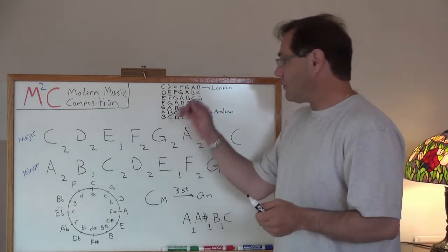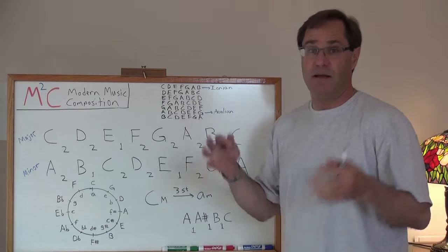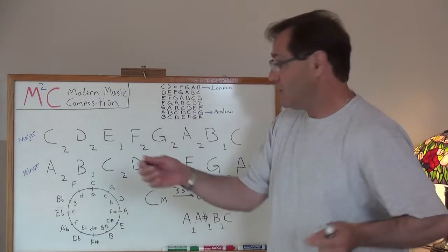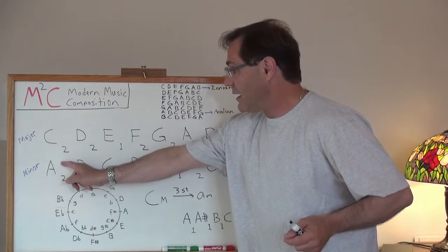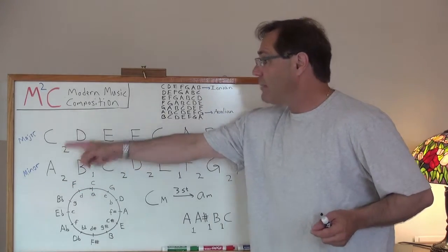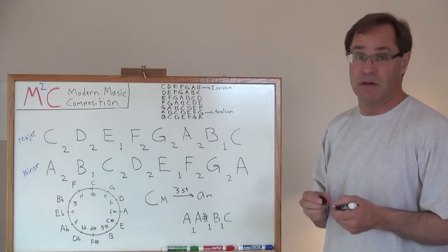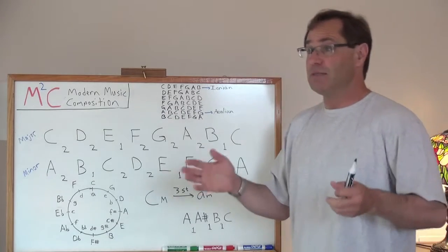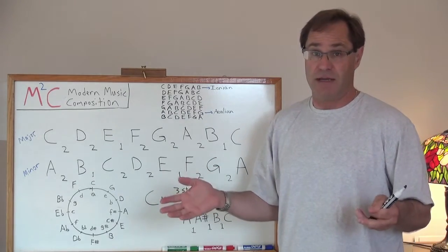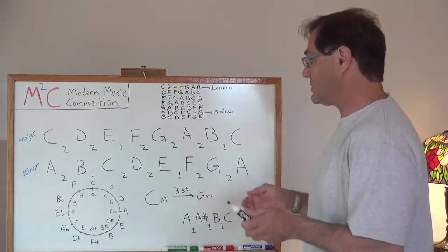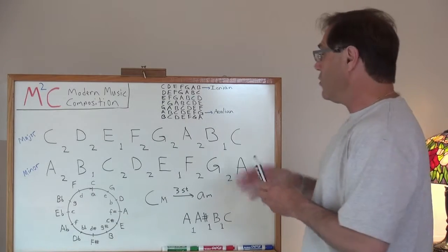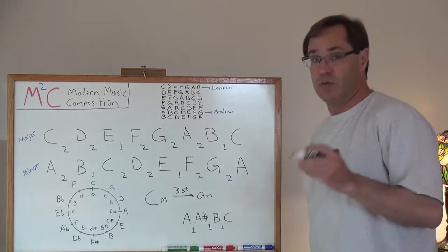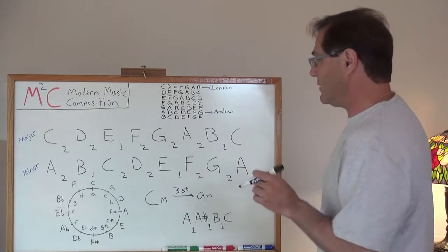I'm going to show you in a little bit more detail how you actually get to that point. You can actually derive the minor scale from the major scale by just doing a series of inversions on the major scale. In fact, that's what defines the modes of the diatonic scale.